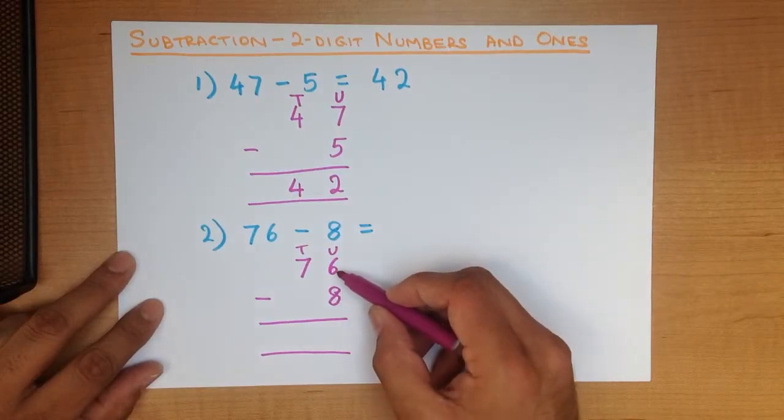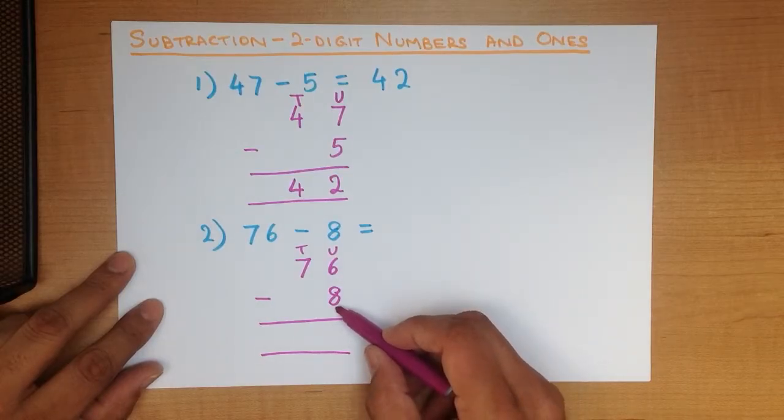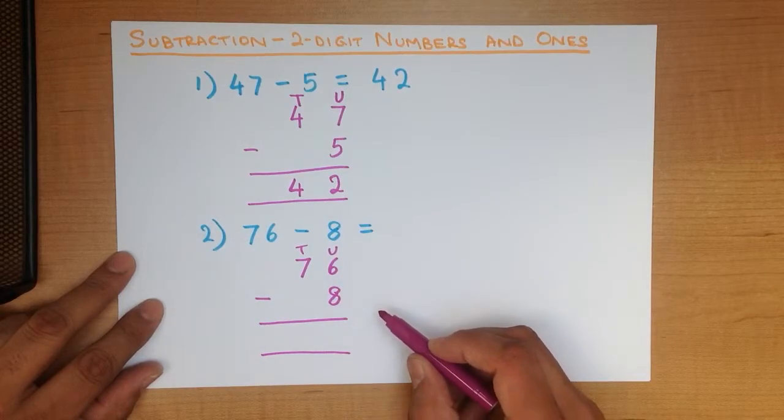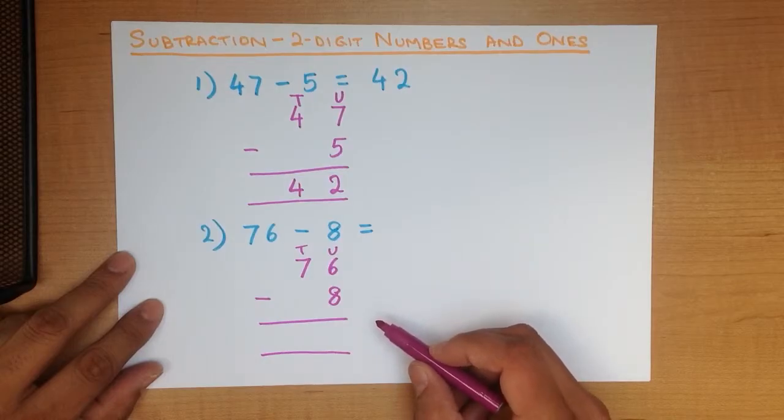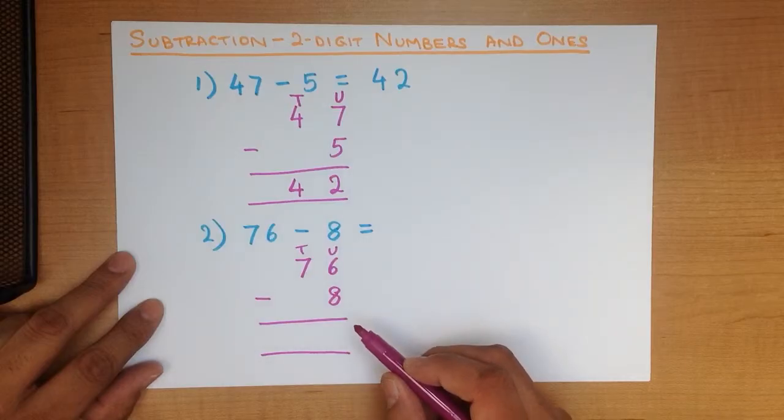Well we can't do that because 6 is smaller than 8. 6 is smaller than 8. So what we have to do is, we have to take 1 from the number next to it.